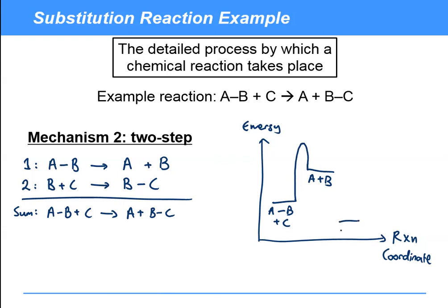And then if this is going to be exothermic, we're going to have A plus BC, then we're going to have another energy barrier going to there. So this is a two-step mechanism.